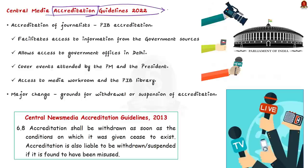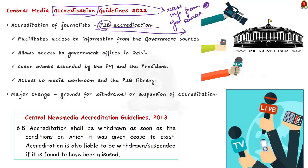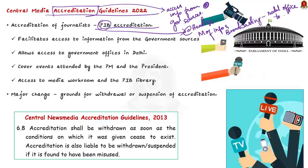The new policy is for accreditation of journalists. This accreditation is also called PIB accreditation — that is, Press Information Bureau accreditation — because PIB is the one that provides this accreditation at the headquarters. PIB functions under the Ministry of Information and Broadcasting; it is the nodal agency of the Government of India to disseminate information to the print and electronic media regarding government policies, programs, initiatives, and achievements.